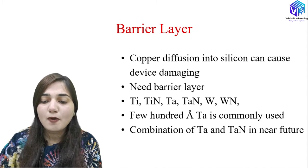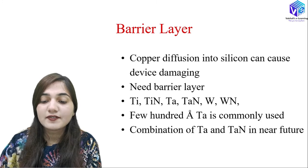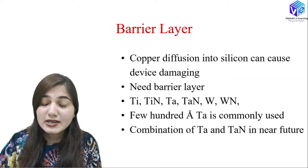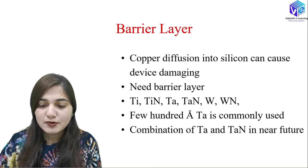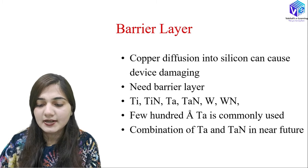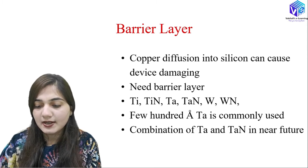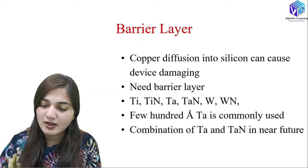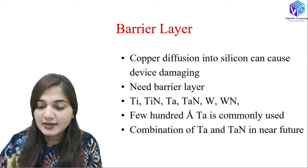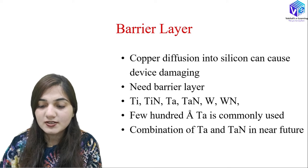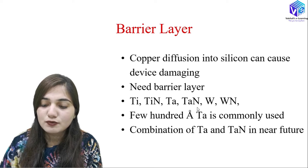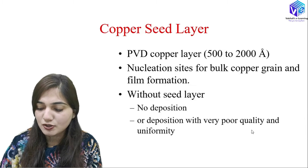For the barrier layer: copper diffuses into silicon and causes device damage, so a barrier layer is essential. The barrier layer can be formed from titanium, titanium nitride, tantalum, tantalum nitride, or tungsten nitride. The barrier layer is typically a few hundred angstroms thick. Tantalum is the most commonly used metal, and tantalum nitride is the second most common. We can also use a combination of both.